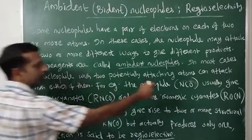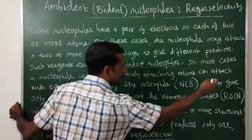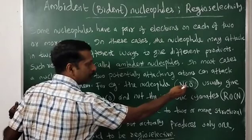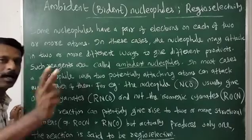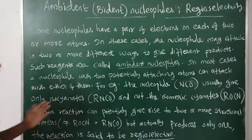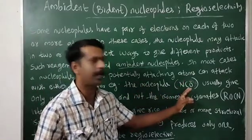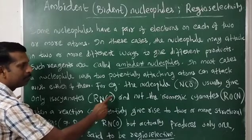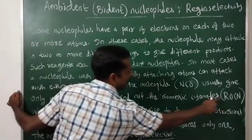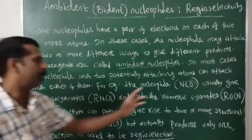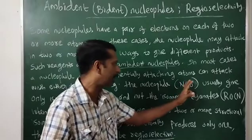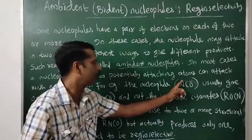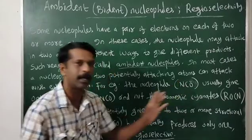The nucleophile NCO⁻ can attack the substrate molecule by using nitrogen or oxygen. Even though both can attack, it usually gives only one product: isocyanate, RNCO. Note the isomeric cyanate would be ROCN. Even though this nucleophile can attack using nitrogen and oxygen, usually it gives only RNCO, meaning nitrogen is typically used for attacking the substrate molecule.